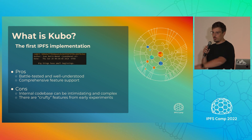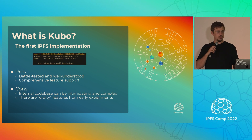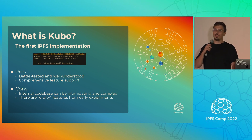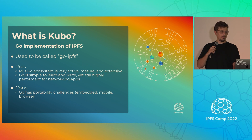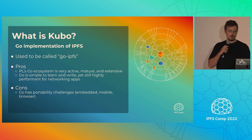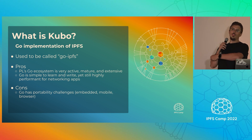Because it's been around for so long, it has a huge amount of features that it supports. Some of the cons are that it's got a huge codebase, which can be intimidating, and there are some features that we haven't done a good job of removing — like failed experiments or partially implemented things. There's always pressure to move forward, so it's hard to go back and clean things up. Kubo used to be called Go IPFS — if you've been around for a while, you might know it by that name. We renamed it to free up the IPFS namespace for other implementations.